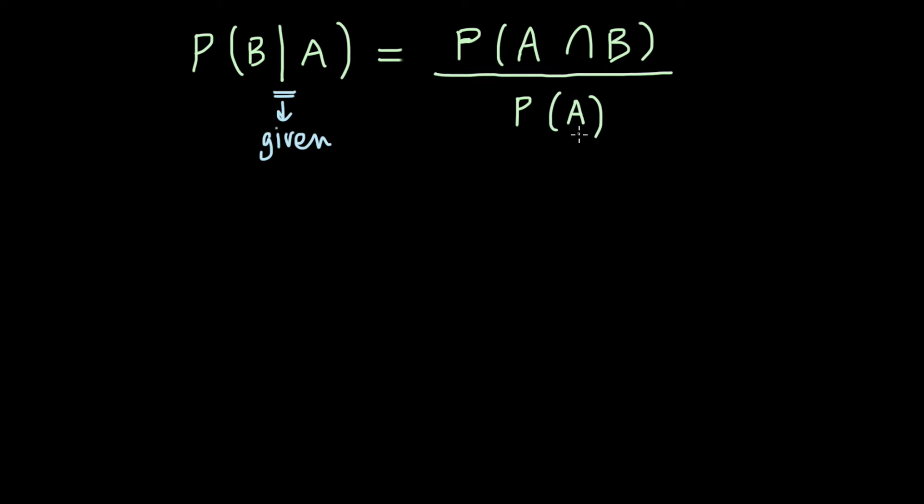So what this means is if I want to find the probability of event B, given that event A has occurred or not occurred depending on the question, then this would be the formula that I use. To better understand this concept, let's look at some examples.